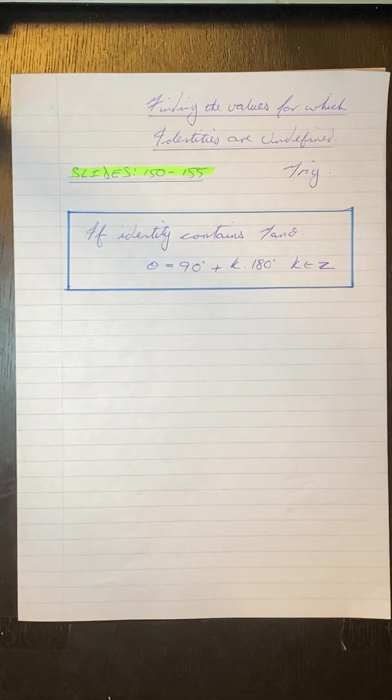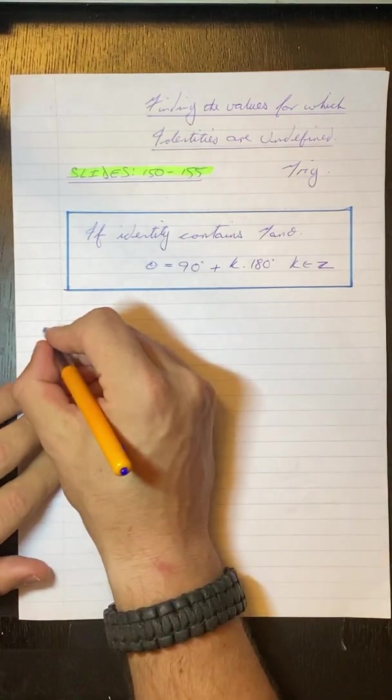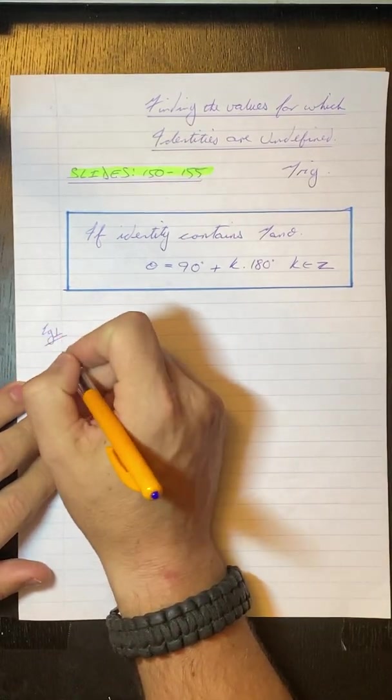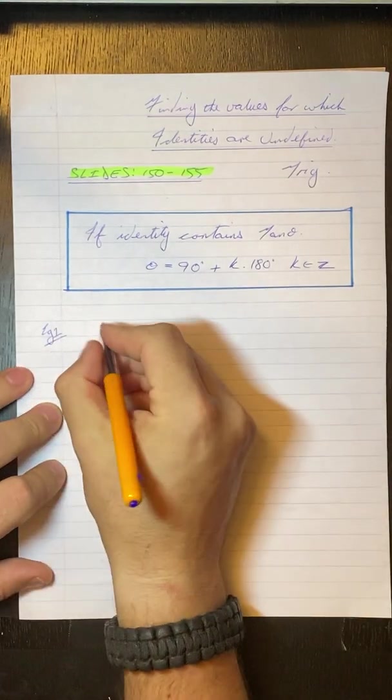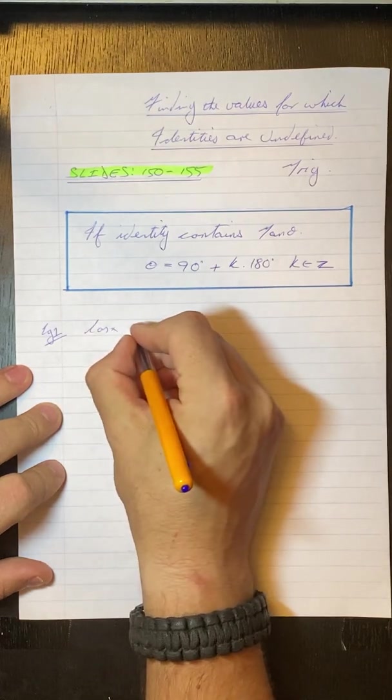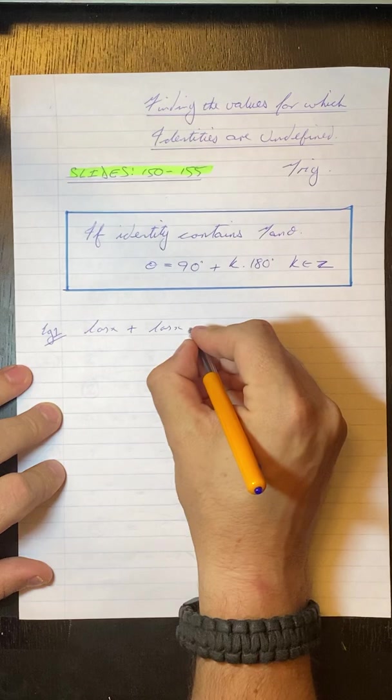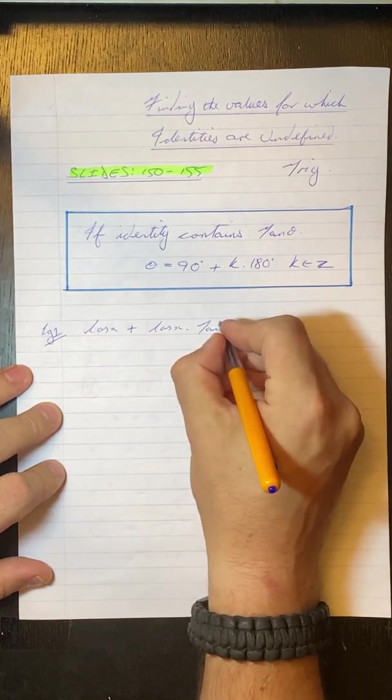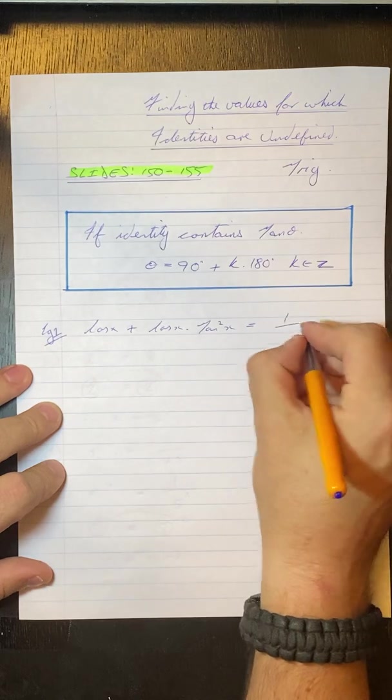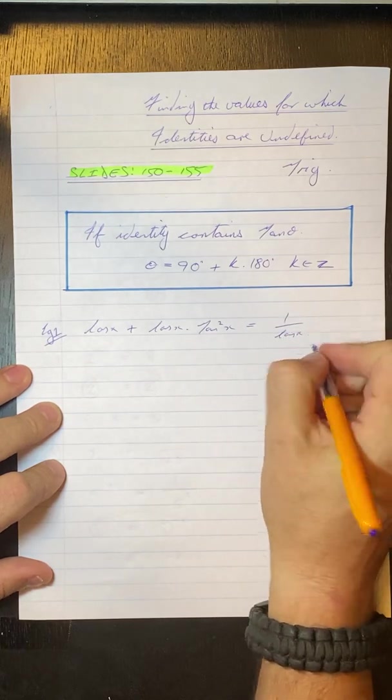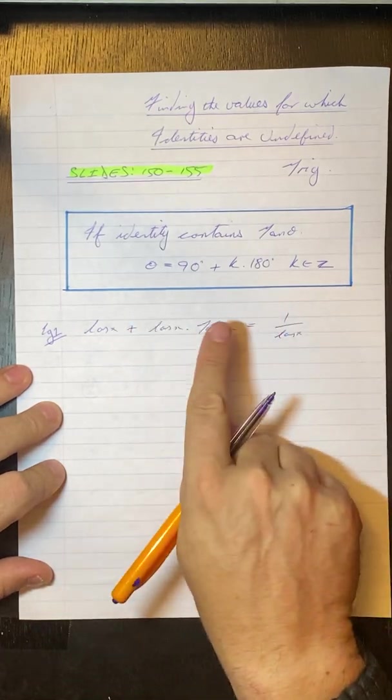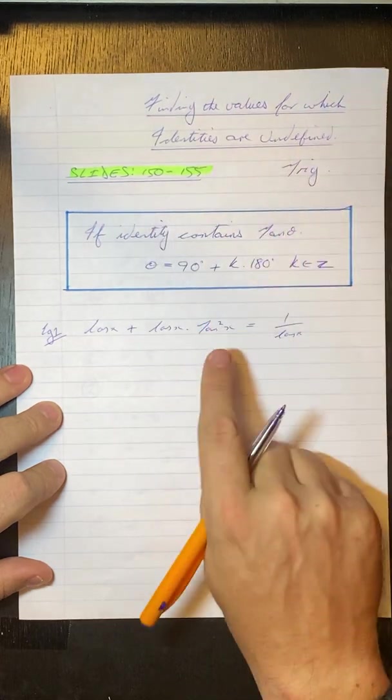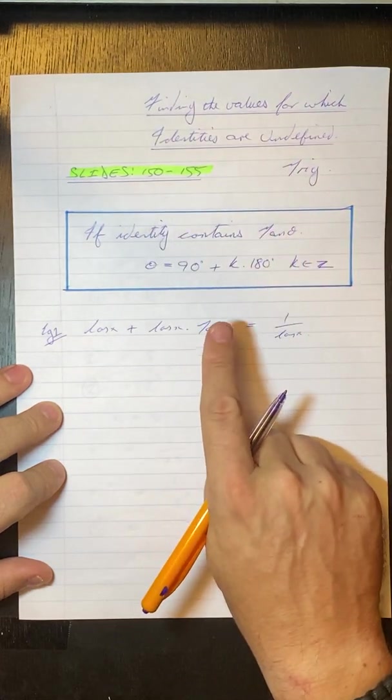That'll become a little bit more clear now when we go through an example. So if we look at example one, they're asking us for which values of x is the identity cos x plus cos x times tan squared x equals 1 over cos x undefined. So if we look at this identity we don't have to prove it, but we just have to show where this thing would be undefined. So straight away we have a tan x.